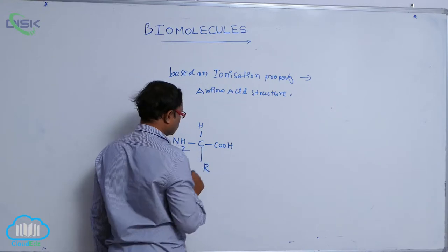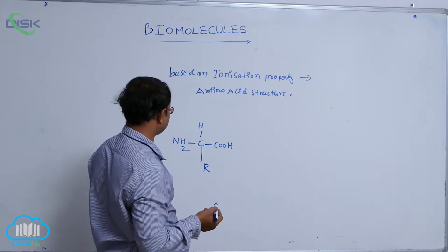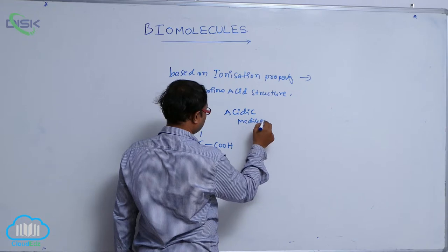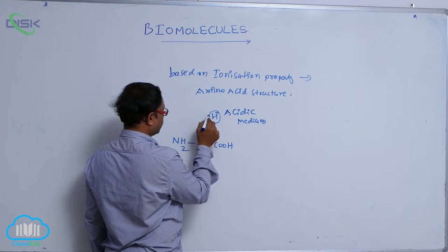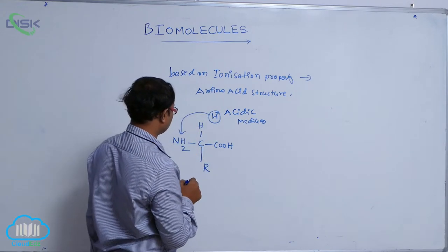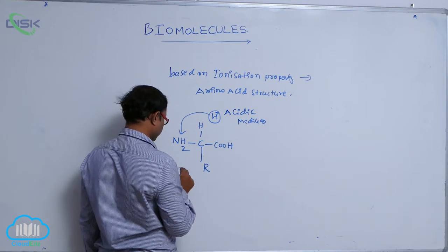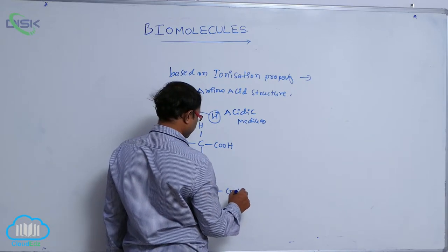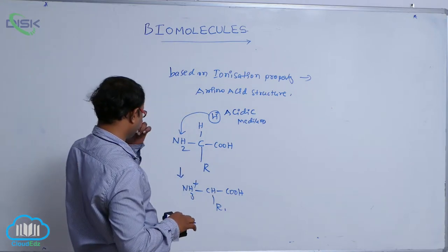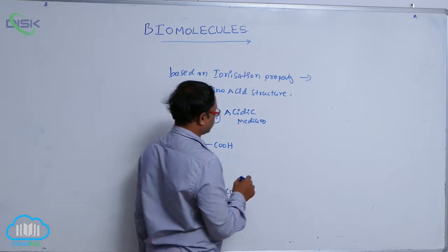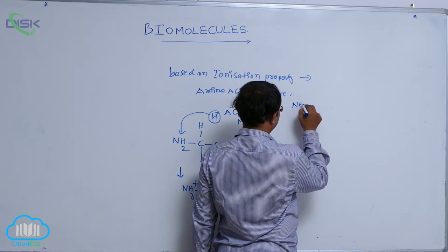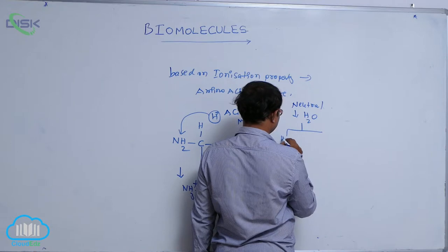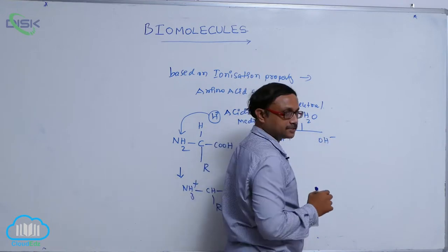For example, in acidic media, H+ is added to NH2 and it is converted into NH3+, giving the structure NH3+ — CH — COOH — R. So when in acidic media, the amino group is protonated to NH3+ and the carboxyl group remains as COOH.